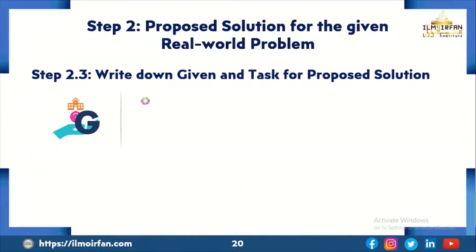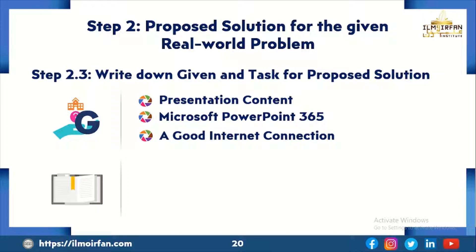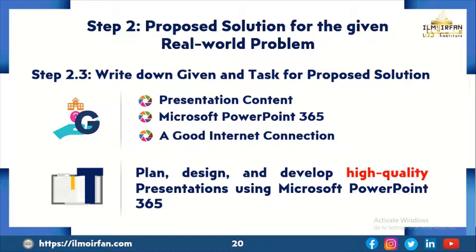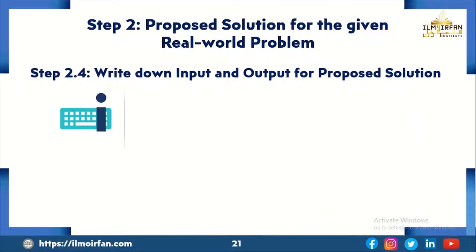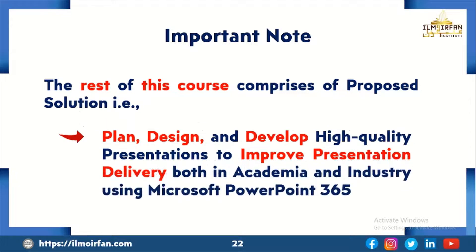The third sub-step of step 2 is to write down the given and task for the proposed solution. The fourth sub-step is to write down the input and output for the proposed solution. The input is presentation content, and the output is a high-quality presentation. Important note: the rest of this course comprises the proposed solution — that is, plan, design and develop high-quality presentations to improve presentation delivery both in academia and industry using Microsoft PowerPoint 365.